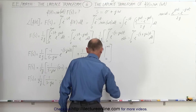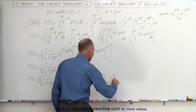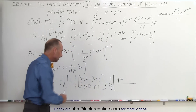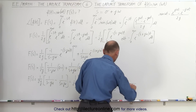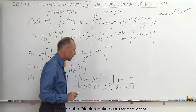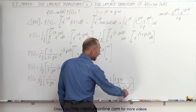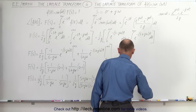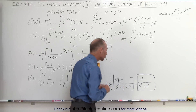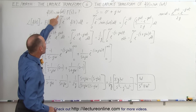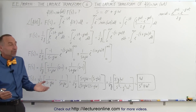Continuing to simplify: this equals 1 over 2j times — s minus s is 0, and j omega minus negative j omega is 2j omega — divided by s squared minus j squared omega squared. Notice the j in the numerator and the j in the denominator cancel, as do the two 2s. And j squared equals negative 1, so negative 1 times negative 1 is positive. This becomes omega divided by s squared plus omega squared. That is the Laplace transform of f of t equals sine of omega t — in the complex frequency domain, it equals omega divided by s squared plus omega squared.